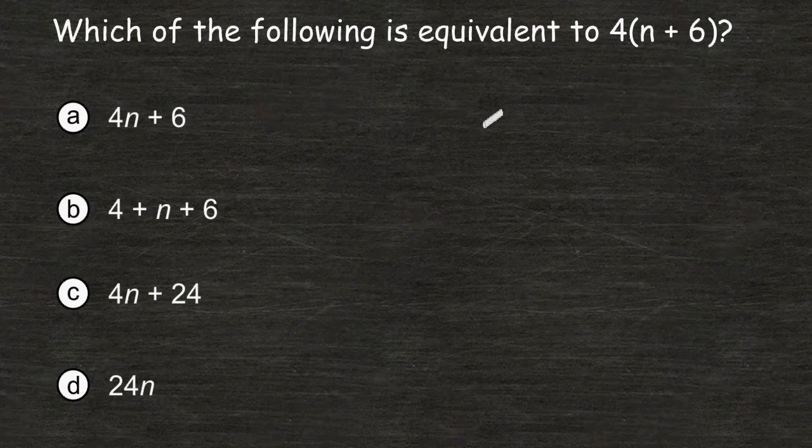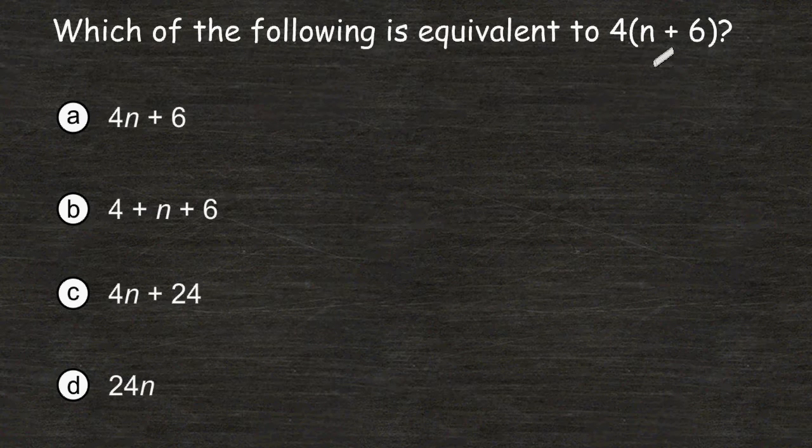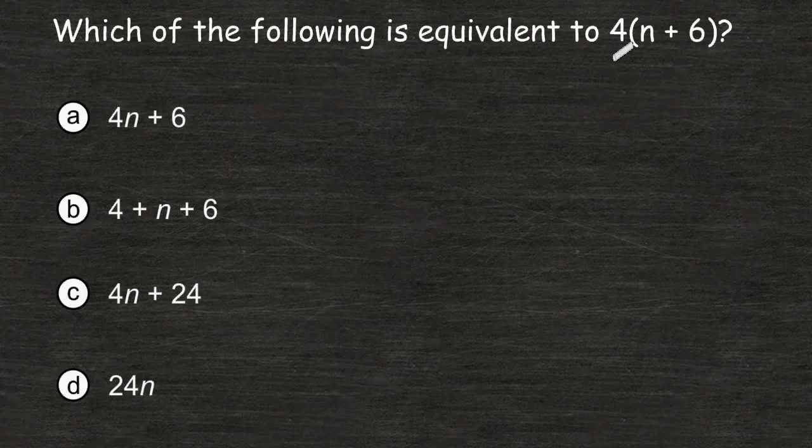For this problem, we have to determine which of the following choices is equivalent to 4 times n plus 6. Whenever you see a number written on the outside of parentheses with no sign directly after that number, that indicates multiplication. It's kind of like saying we have 4 groups of n plus 6.